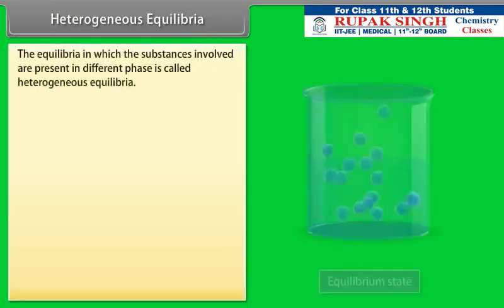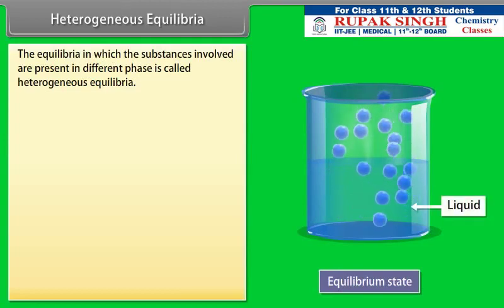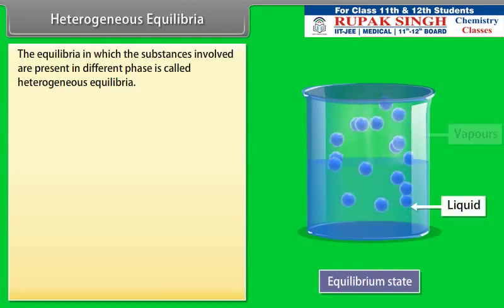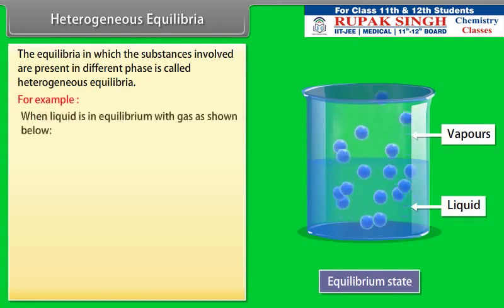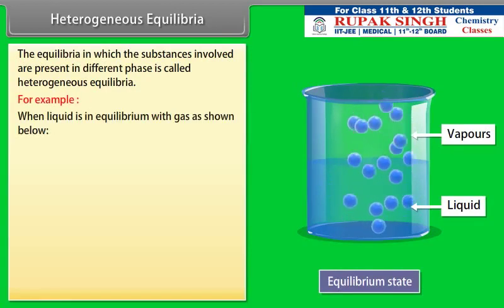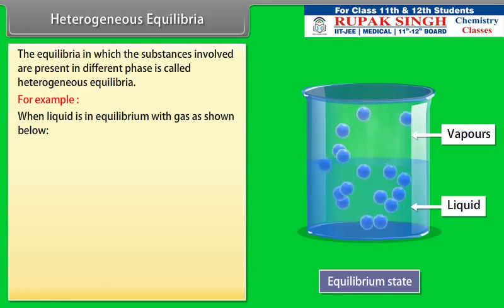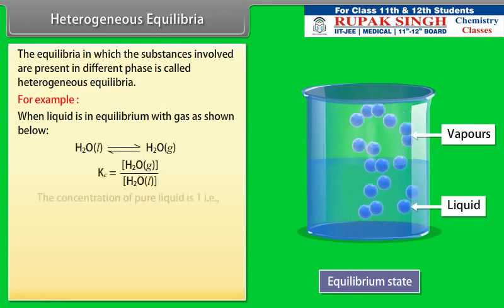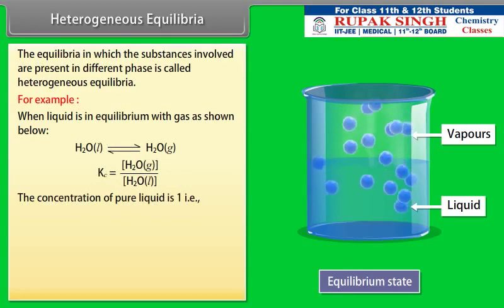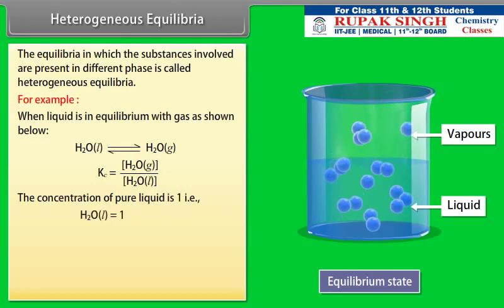Heterogeneous Equilibria: The equilibria in which the substances involved are present in different phases are called heterogeneous equilibria. For example, when liquid is in equilibrium with gas, the equilibrium constant is expressed accordingly, and the concentration of pure liquid is taken as 1 — that is, H₂O in liquid form equals 1.